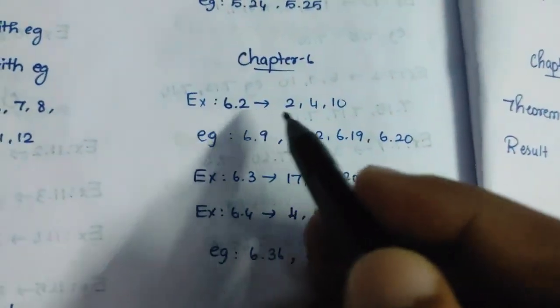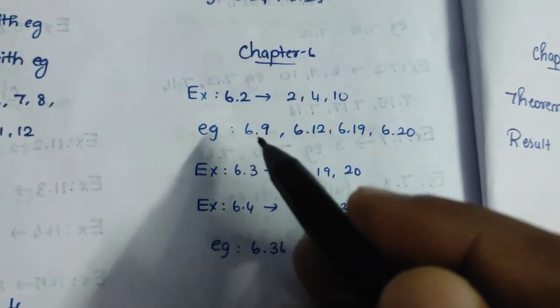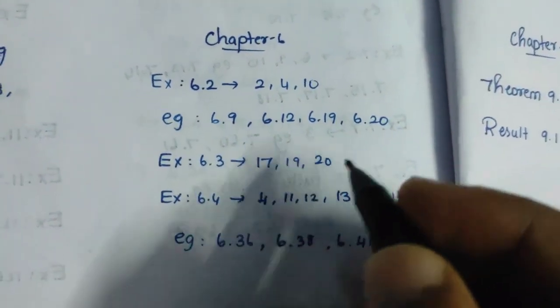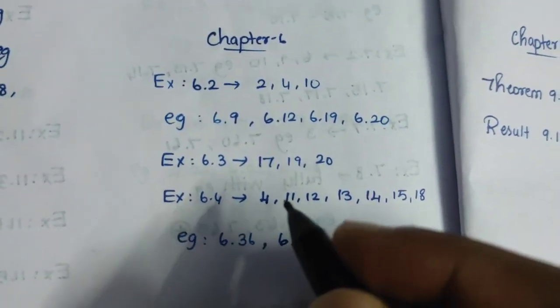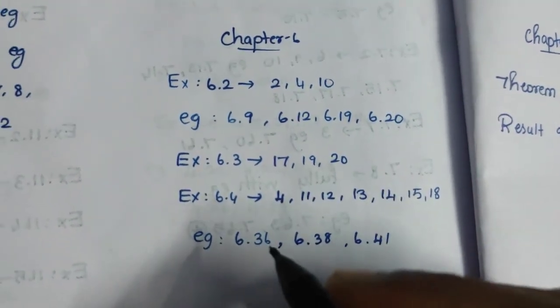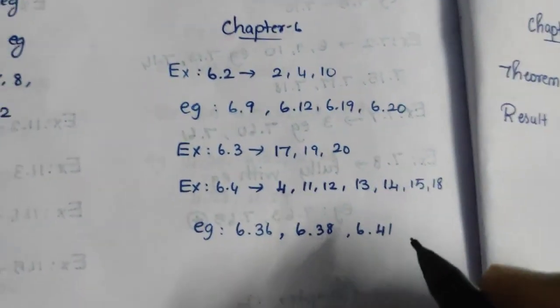Chapter 6. Exercise 6.2, 2, 4, 10. Example 6.9, 12, 19, 20. Exercise 6.3, 17, 19, 20. Exercise 6.4, 4, 11, 12, 13, 14, 15, 18. Exercise 6.36, 6.38, 6.41. This is the sixth chapter.